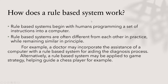How does a rule-based system work? Rule-based systems begin with humans programming a set of instructions in a computer. Rule-based systems are often different from each other in practice while remaining singular in principle. In short, you use rules to tell a machine what to do and the machine will do exactly as you tell it. From this rule-based system, you will execute the actions until you tell it to stop. For example, a doctor may incorporate the assistance of a computer with a rule-based system for aiding the diagnosis process.